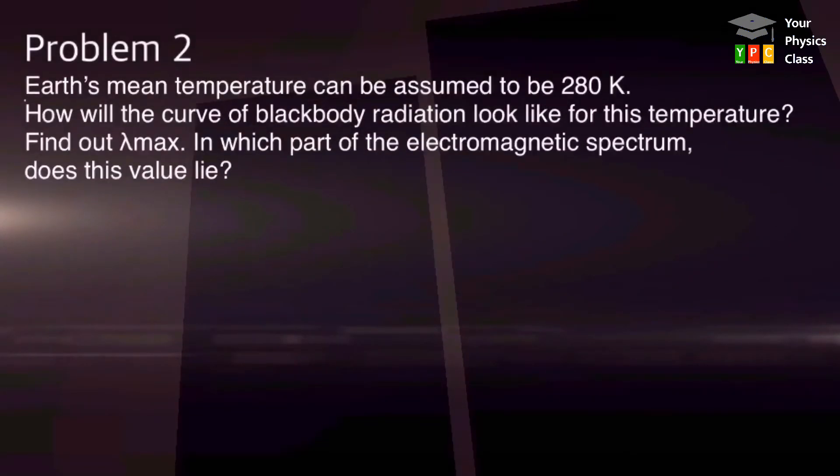Now look at the second problem. Earth's mean temperature is given. How will the curve of black body radiation look like for this temperature? Find out lambda max and in which part of the electromagnetic spectrum does this value lie? This is the problem. Let us sort out the given values.